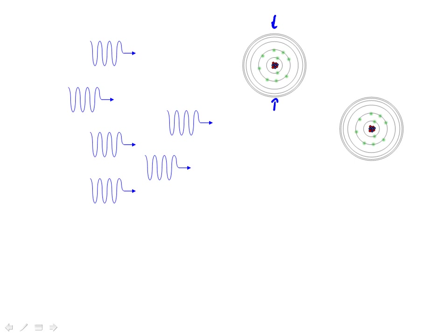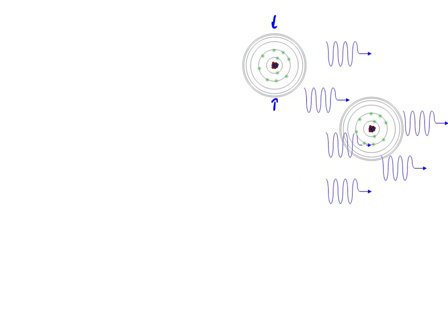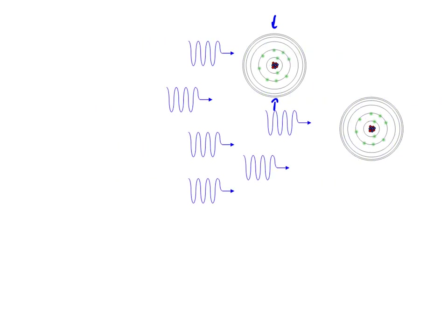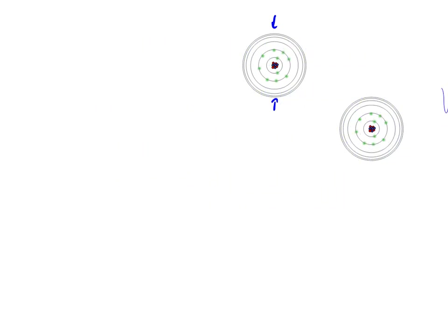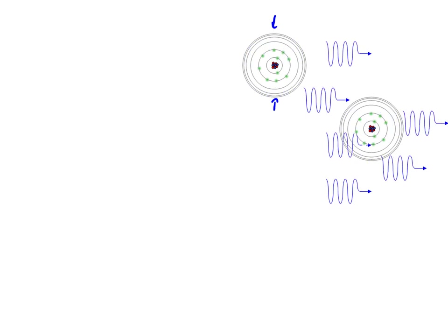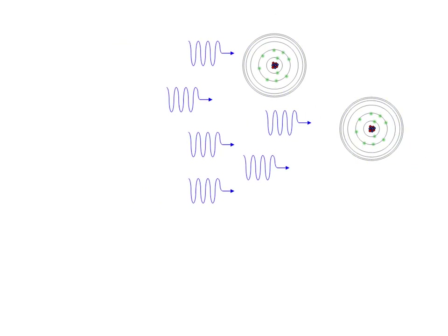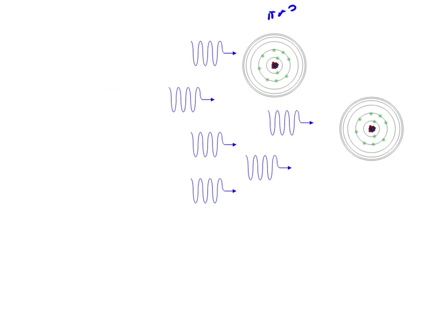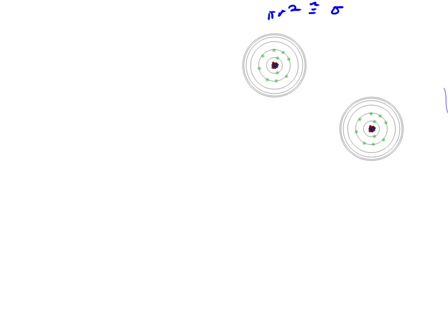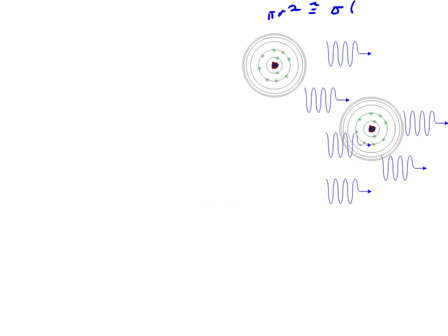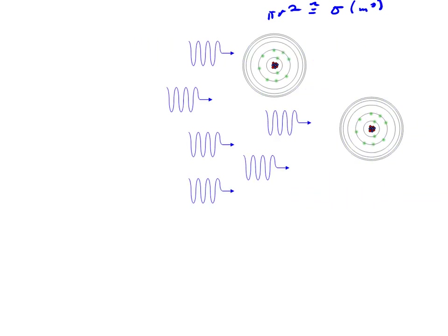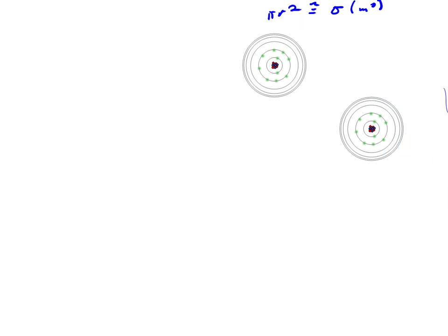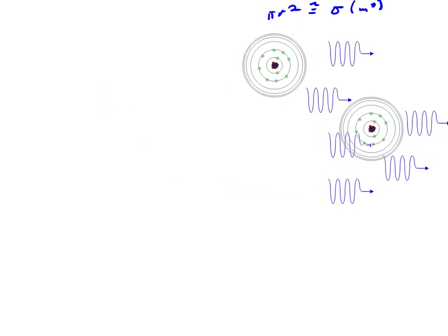And as photons come along, the odds of the photons hitting the atom essentially have to do with, if you think, the size of the atom. And if you think about the cross-sectional area of the target, right, which is pi r squared, and think of that approximately as the cross-section sigma, which is going to be given in terms of meters squared, you've got a pretty good idea of what a cross-section means.